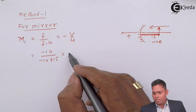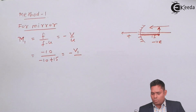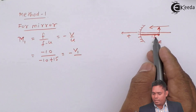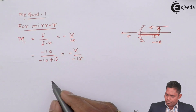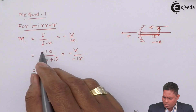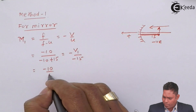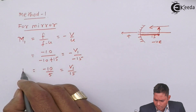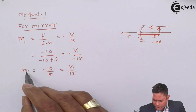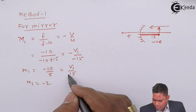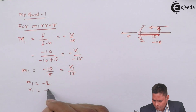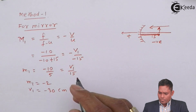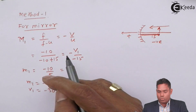This gives m1 = −10 / 5 = −V1 / 15. So M1 (mirror) = −2, and the image distance V1 = −30 cm. So the mirror forms an image 30 cm in front of it, and the mirror magnification is −2.